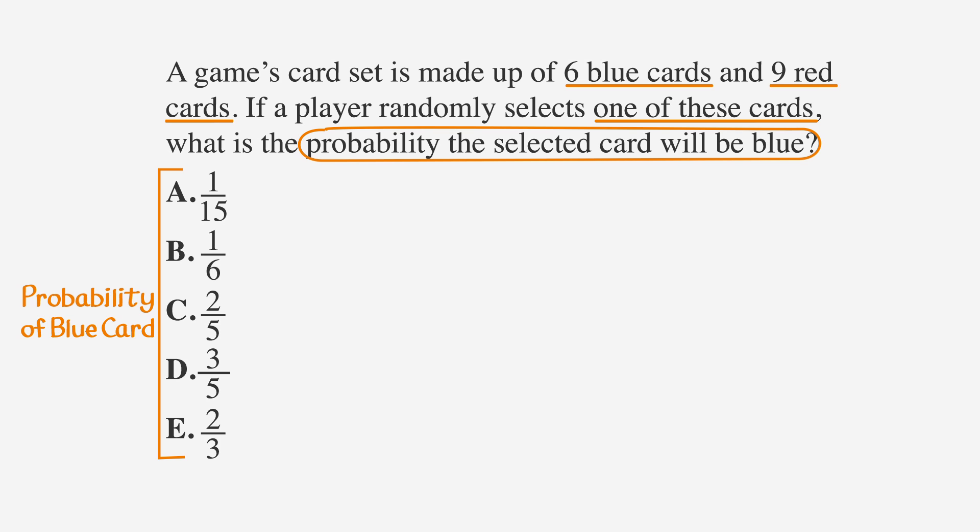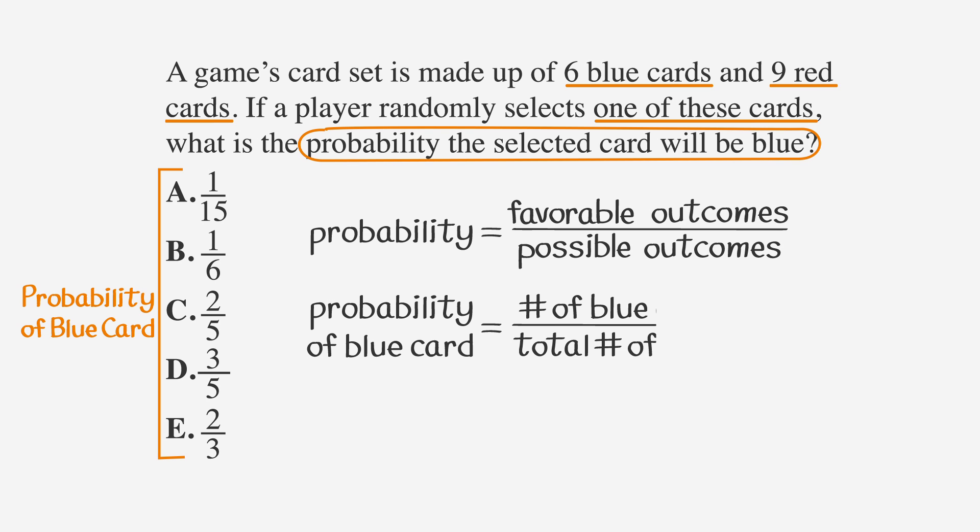All we need to do here is to go back to our probability equation and substitute our numbers. So the probability of drawing a blue card is the number of blue cards over the total number of cards. So that's 6 over 15. If we simplify that by dividing both the top and the bottom by 3, we get 2 over 5 or answer choice C.